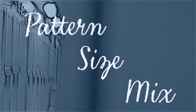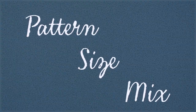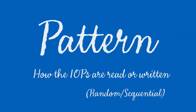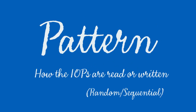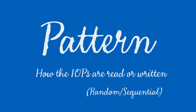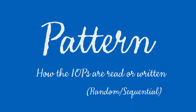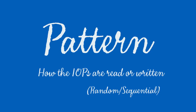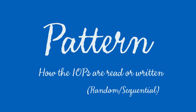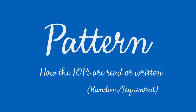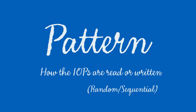The pattern is determined by how the IOPS are read or written. This can be random or sequential. Random IOPS patterns operate in a uniformly scattered manner across the dataset. Sequential IOPS patterns operate on data that is located closely together.